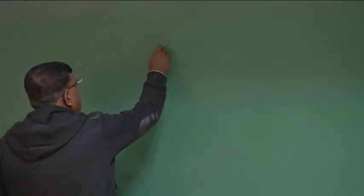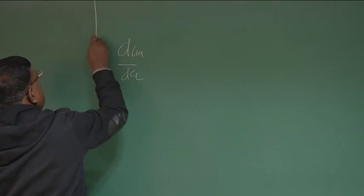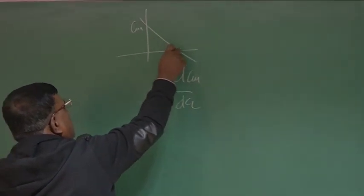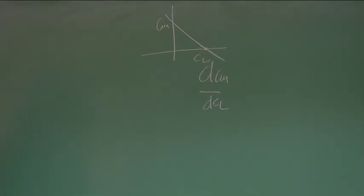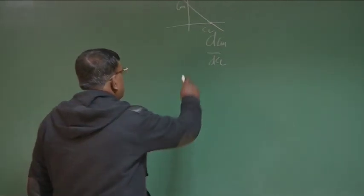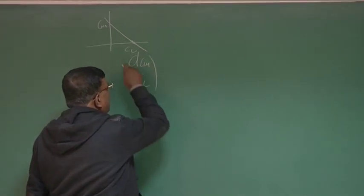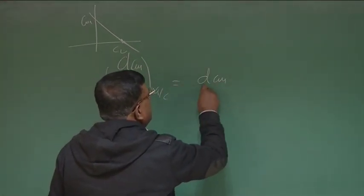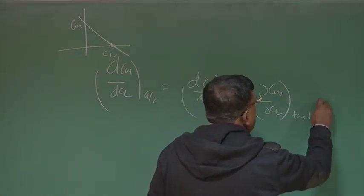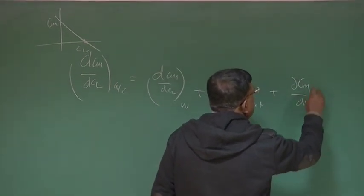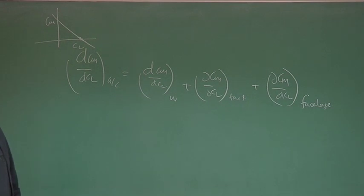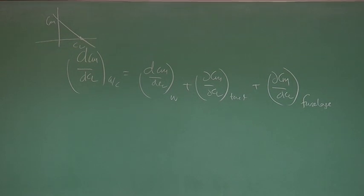We have been talking about dCM/dCL. On a CM versus CL graph, dCM/dCL is the slope at trim, and if it is negative the airplane is statically stable. We always talk about the slope at trim because we check static stability by disturbing the airplane from its equilibrium. The total aircraft dCM/dCL is broken into contributions from wing, tail, fuselage, and engine.